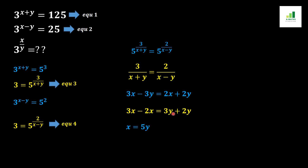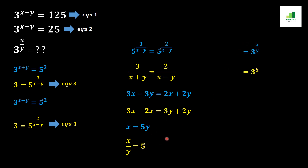Simplifying further, 3x minus 2x equals x, and 3y plus 2y equals 5y, so we get x equals 5y. Dividing both sides by y gives x over y equals 5. Now substituting into our required expression, 3 to the power x over y becomes 3 to the power 5, which equals 243. This is our final answer.